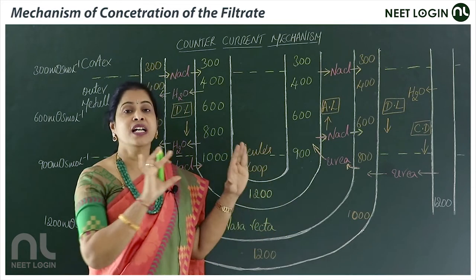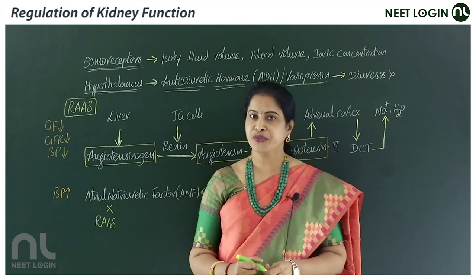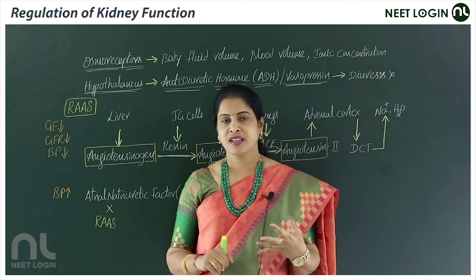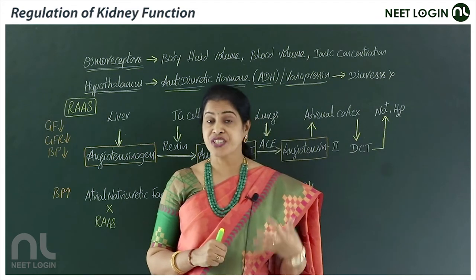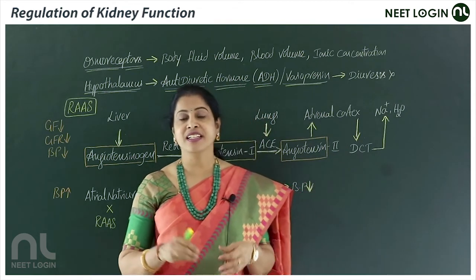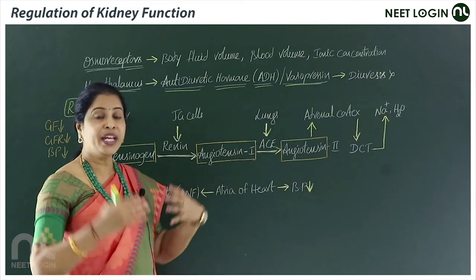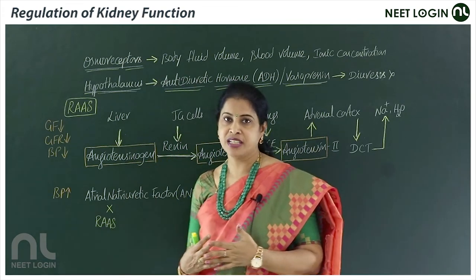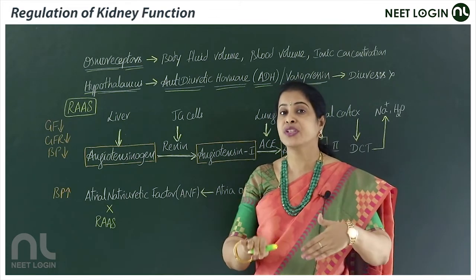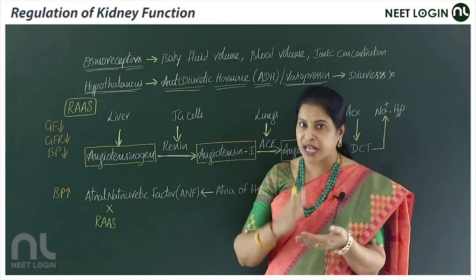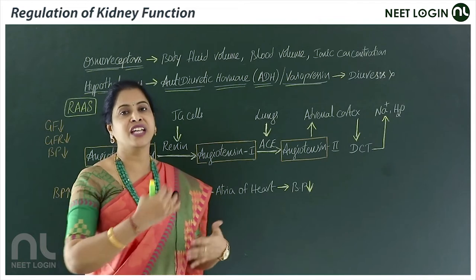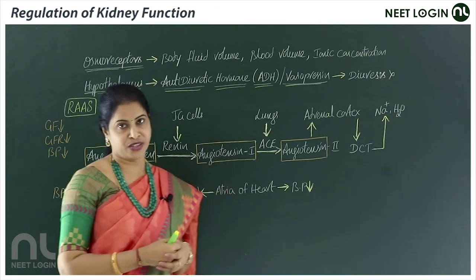Regarding regulation of kidney function: the hypothalamus, a part of the forebrain, the heart, and the JG cells in the kidney all regulate kidney function. Throughout the body, osmoreceptors are present. Their function is to sense and monitor body fluid volume, blood volume, and ionic concentration. If any imbalance occurs, they initiate regulatory responses.